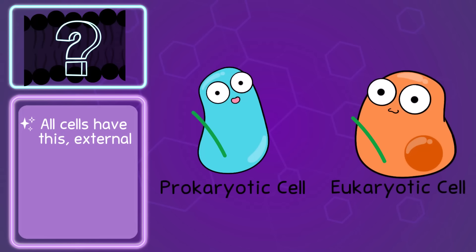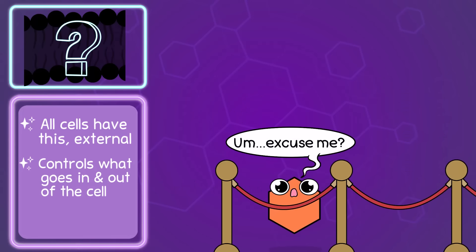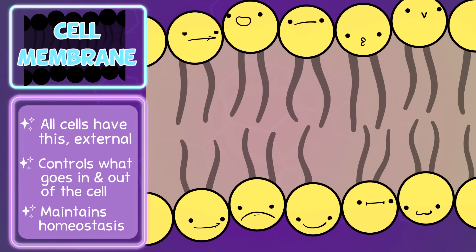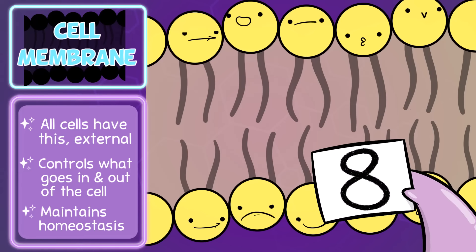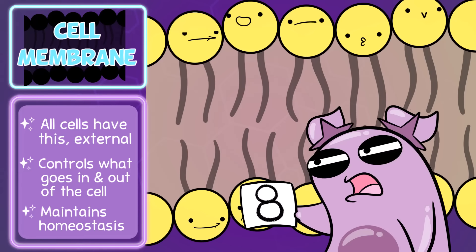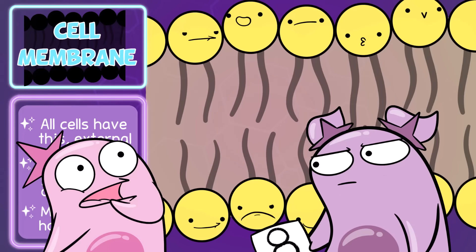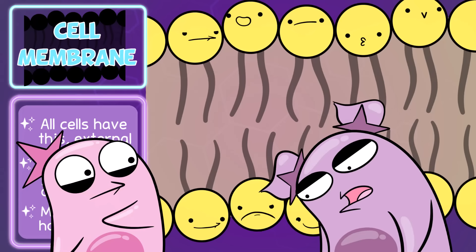Okay. First structure: this is something all cells have, both prokaryotic and eukaryotic cells. It's an external structure, really important for controlling what goes in and out of the cell, which means it is important for homeostasis. It is the cell membrane. I give it an 8 out of 10. Not very cute, but I know this thing is important, mainly because you've used the word homeostasis like over 9,000 times in our videos. That's a Dragon Ball Z reference. Just move on.